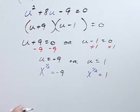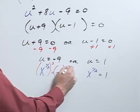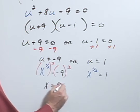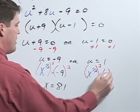To eliminate the 1 half power, I can square both sides. So x will equal 81 or squaring both sides, x would equal 1.